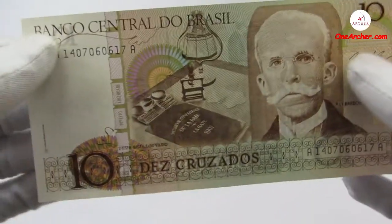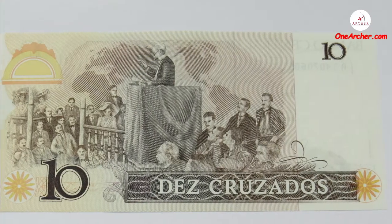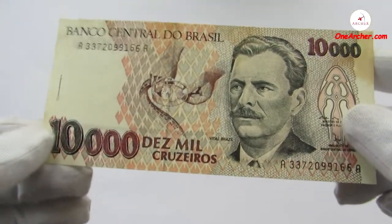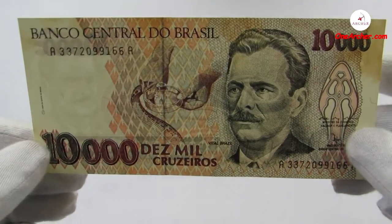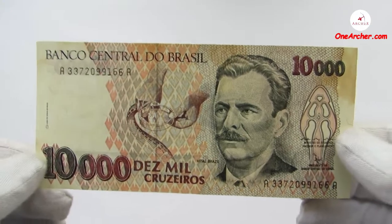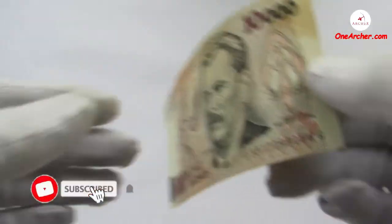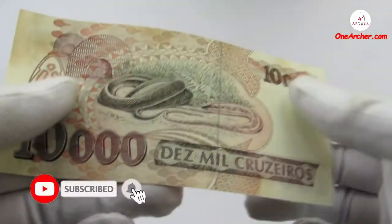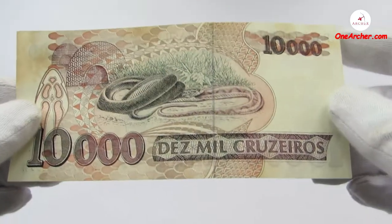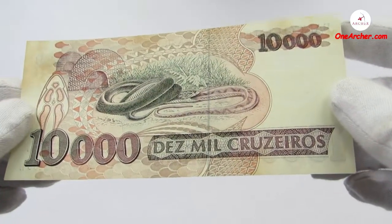On the reverse is Ruy Barbosa speaking at the peace conference at The Hague in 1899. The second one is 10,000 Brazilian Cruzados issued between 1991 to 1993. On the obverse is Vital Brazil, who was a Brazilian physician, biomedical scientist, and immunologist. On the reverse are the snakes.